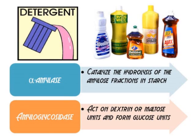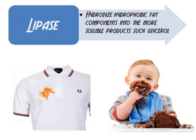For food-based stains, amylase is used to catalyze the hydrolysis of the amylose fractions in starch. Amyloglucosidases act on dextrin or maltose units and form glucose units. Some rigid oil stains can be removed by using lipase, which hydrolyzes hydrophobic fat components into more soluble products such as glycerol.